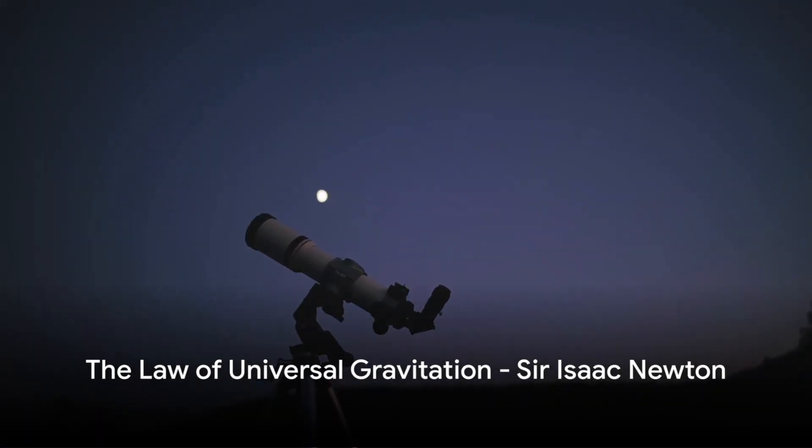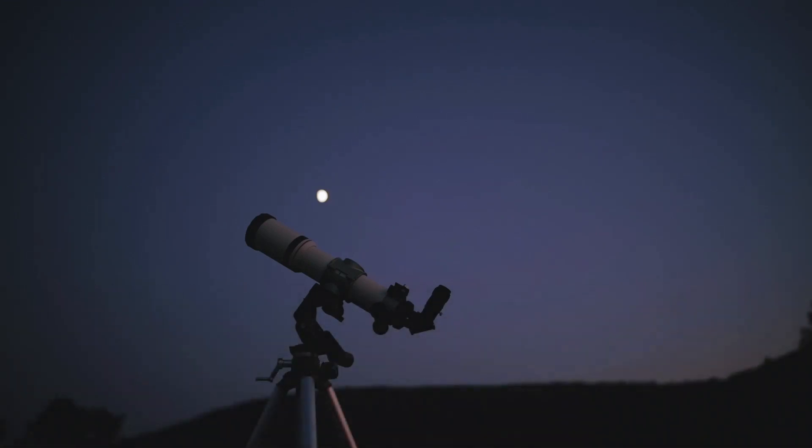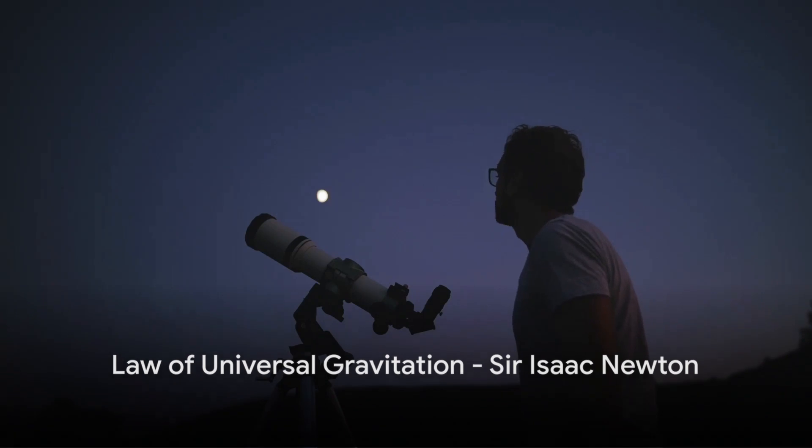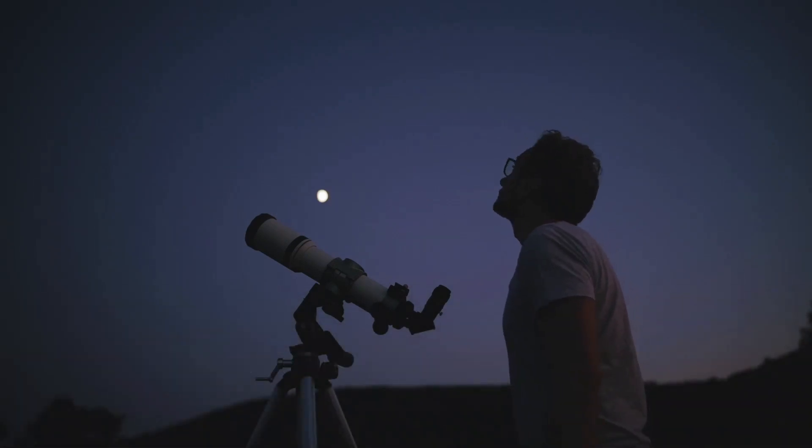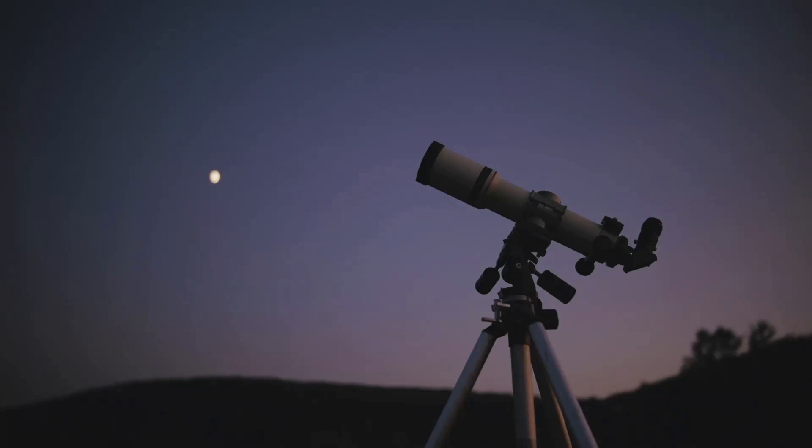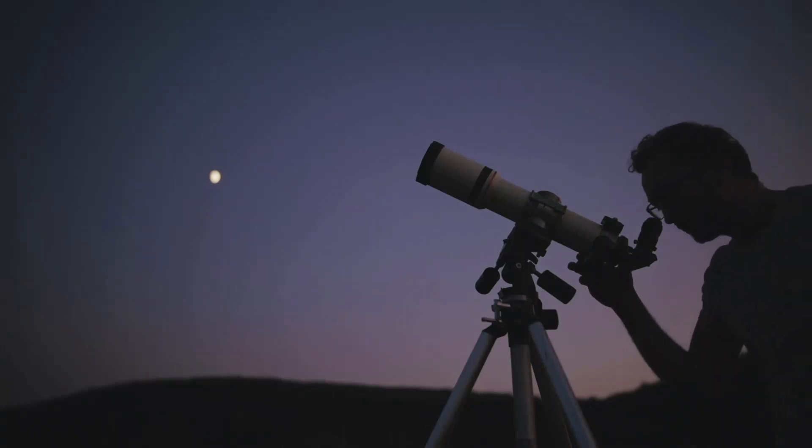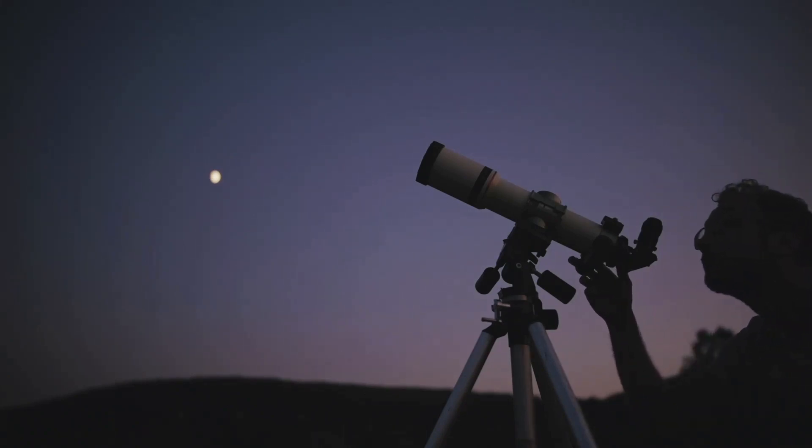Now, we meet Sir Isaac Newton, the man who explained why the planets move as they do. Sir Isaac Newton, a titan of the scientific revolution, forever altered our understanding of the cosmos with his law of universal gravitation. He postulated that every particle of matter in the universe attracts every other particle with a force directly proportional to the product of their masses and inversely proportional to the square of the distance between them.